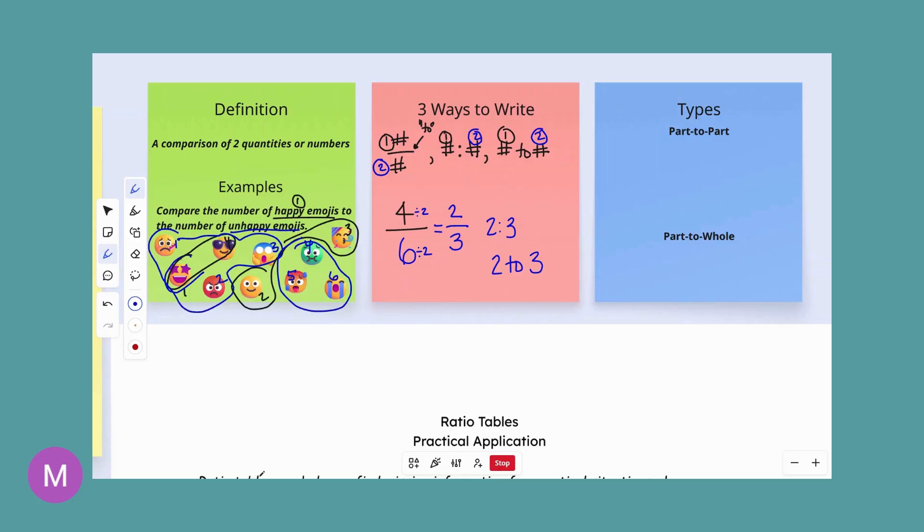And then the different types. So part to part is when you're comparing one thing to another thing like happy to unhappy. So that would be an example of a part to part: happy emojis to unhappy emojis. We're looking at one thing to the next thing. Part to whole would be if we said let's compare the number of unhappy emojis to the total emojis that are present there. This would be a fraction, part to whole.